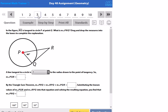Let's do some examples from the Day 48 assignment. Here in this figure they tell us that RQ is tangent to this circle P at point Q, so point Q is the point of tangency. So what is the measure of PRQ?